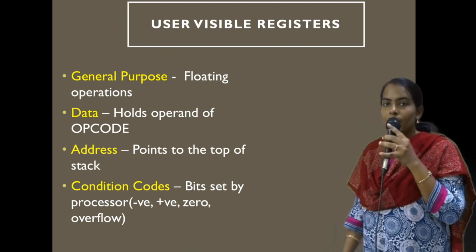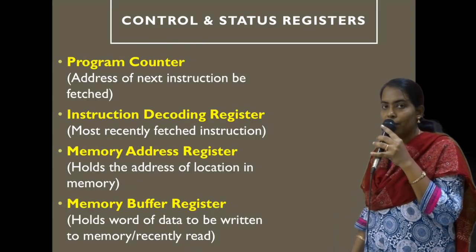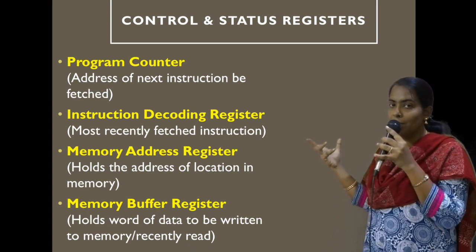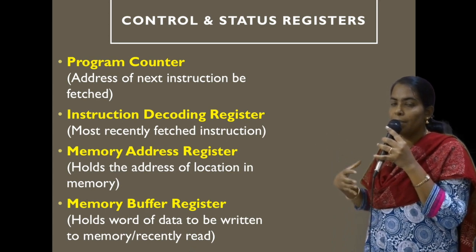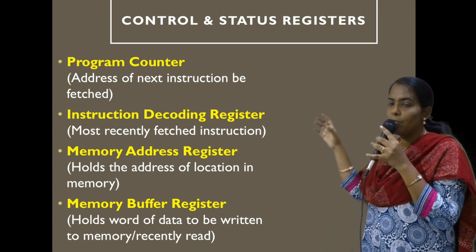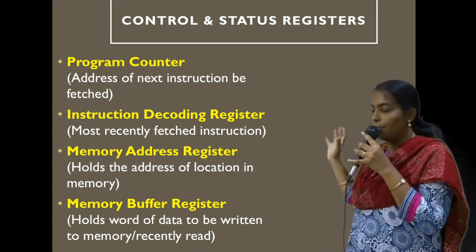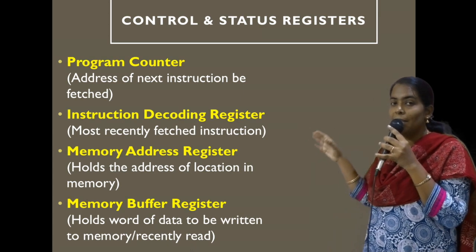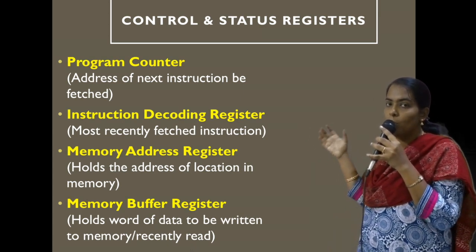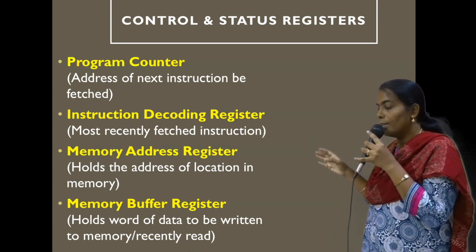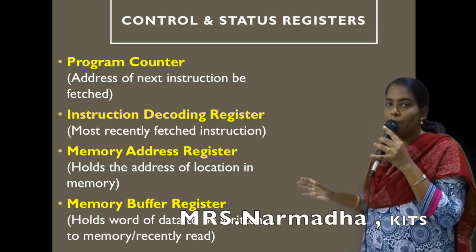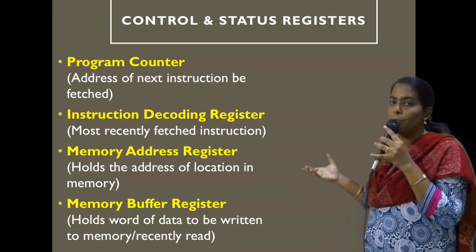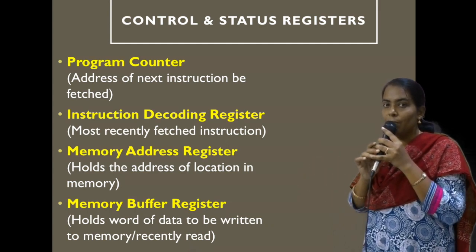The next category is control and status registers, used by the control unit to coordinate all data movement and computation. The first is the program counter, which holds the address of the next instruction to be fetched from memory. The second is the instruction register, which holds the most recently fetched instruction. The third is the memory address register, which holds the address of the instruction. The fourth is the memory buffer register, which holds the word to be read from or written into the memory.